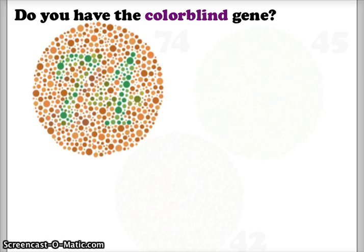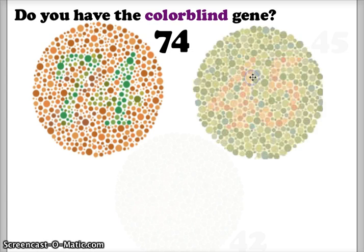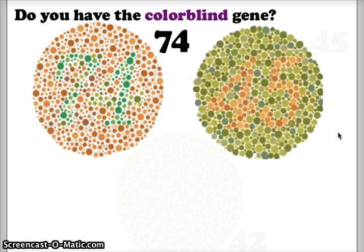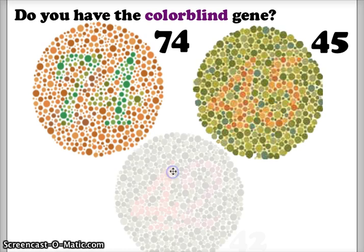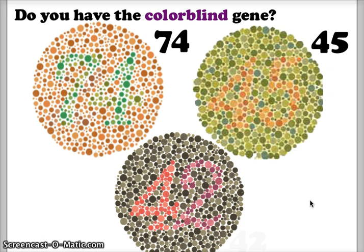Let's see if any of you may have the colorblind gene. If you stare at this circle, you should be able to distinguish a number in the center. We're looking for the number 74 — the 7 is here and the 4 is here. Another example: if you look at this circle directly, you should see the number 45 — the 4 is right here and the 5 is right here. One more example: looking at this circle, we should be able to identify the number 42. If you are not able to distinguish any of those numbers, maybe you need to look into whether you have a form of colorblindness.